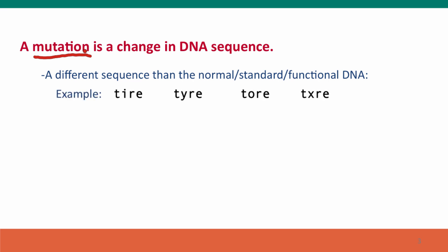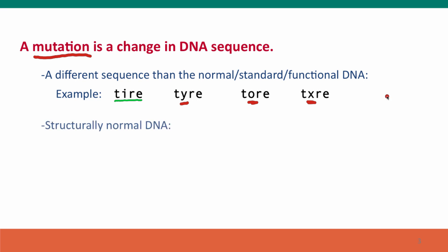If we consider it as text — because this is very much an informational concept — we could say that if the word 'tire' was the normal word, the normal sequence, then any of these changes, like replacing the 'i' with a 'y' (which makes a word with the same meaning), replacing it with an 'o' (makes a word with a different meaning), or replacing it with an 'x' (not really a word at all, but still a string of text) — all of these would be mutations.